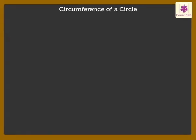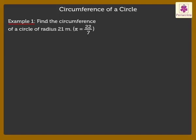Let us solve a few examples. Example 1: Find the circumference of a circle of radius 21 meters. Take pi as 22 upon 7. Circumference of the given circle is equal to 2 pi r which is equal to 2 into 22 upon 7 into 21 which is equal to 132 meters.